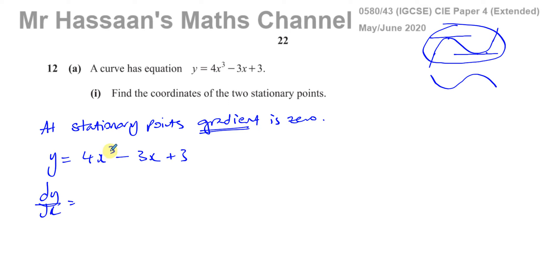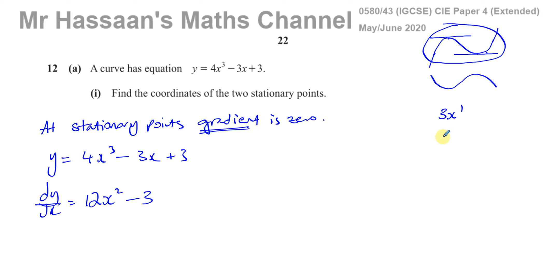When you differentiate, you multiply the coefficient of x by the power and then take 1 from the power. So 4x cubed becomes 12x squared. For minus 3x, that becomes negative 3 — the x is dropped. That's because 3x is 3x to the power of 1; multiply by the power to get 3, then take 1 from the power giving x to the power of 0, which equals 1. So 3x differentiates to 3.